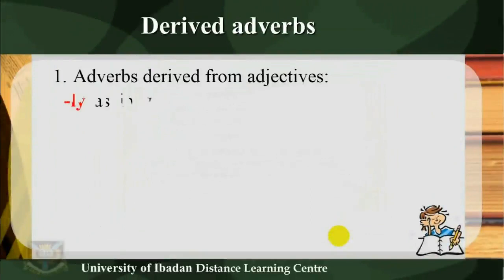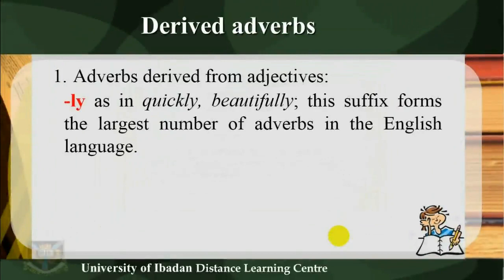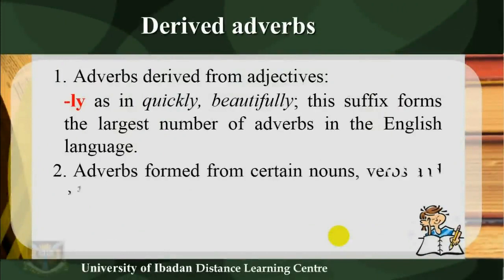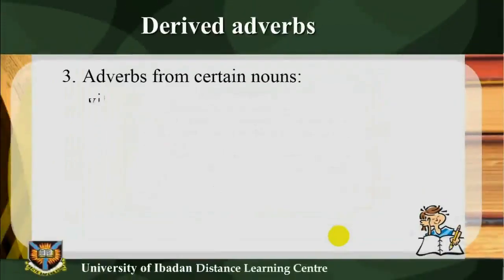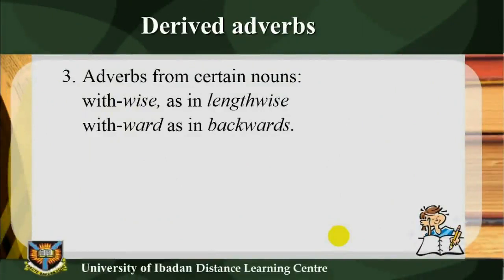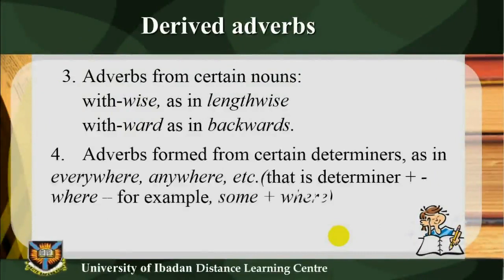Derived adverbs — 1) Adverbs derived from adjectives: -ly (as in 'quickly', 'beautifully') — this suffix forms the largest number of adverbs in the English language. 2) Adverbs formed from certain nouns, verbs and adjectives with the prefix a- (as in 'ahead', 'adrift', 'aloud'). 3) Adverbs from certain nouns with -wise (as in 'lengthwise') and -ward (as in 'backwards'). 4) Adverbs formed from certain determiners — as in 'everywhere', 'anywhere', using the terminator + 'where' — for example, 'some' + 'where'.